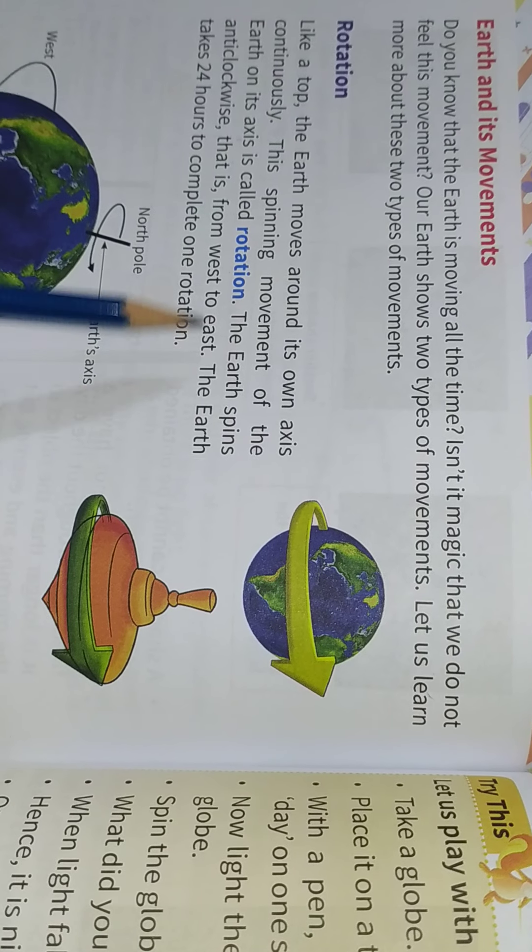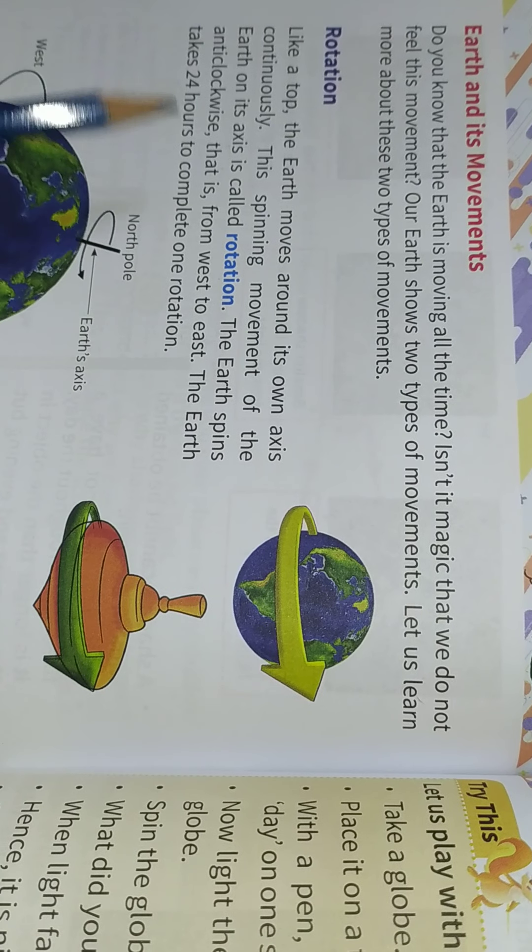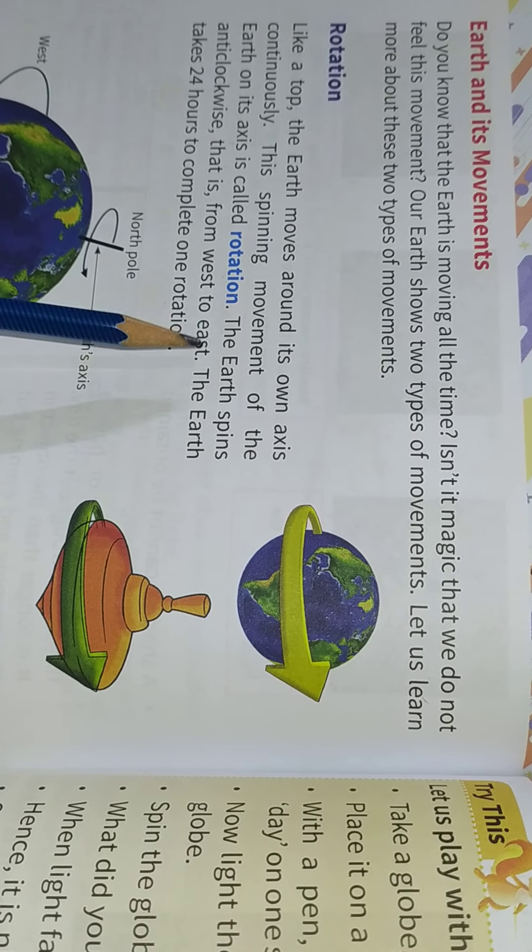The Earth spins anti-clockwise, that is, from west to east. The Earth takes 24 hours to complete one rotation.